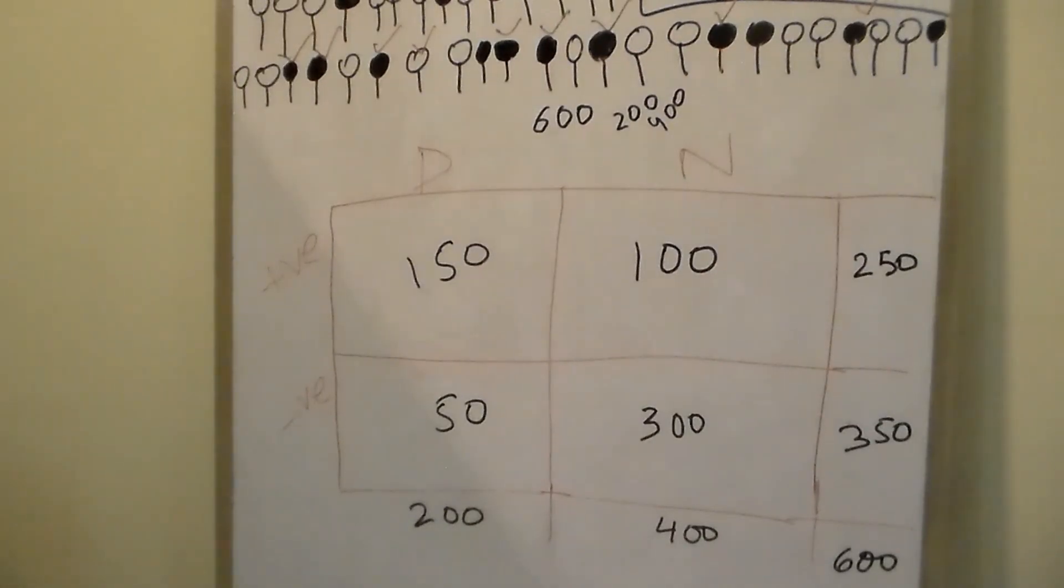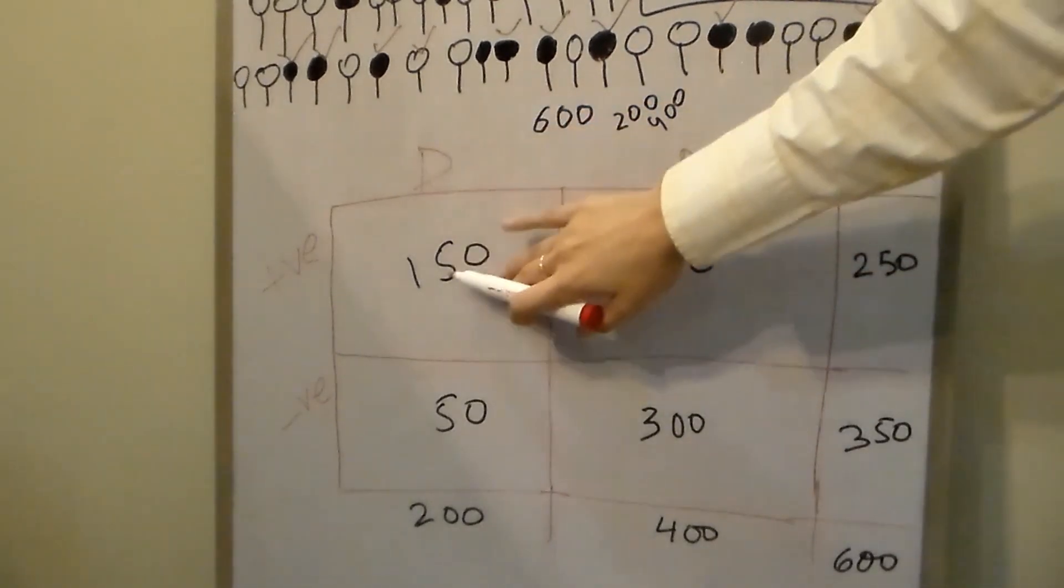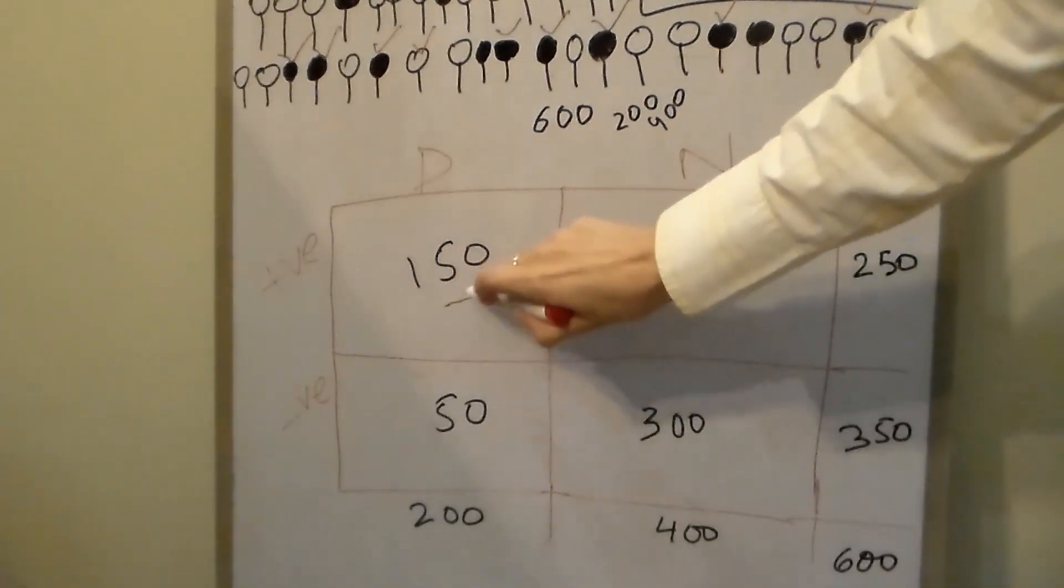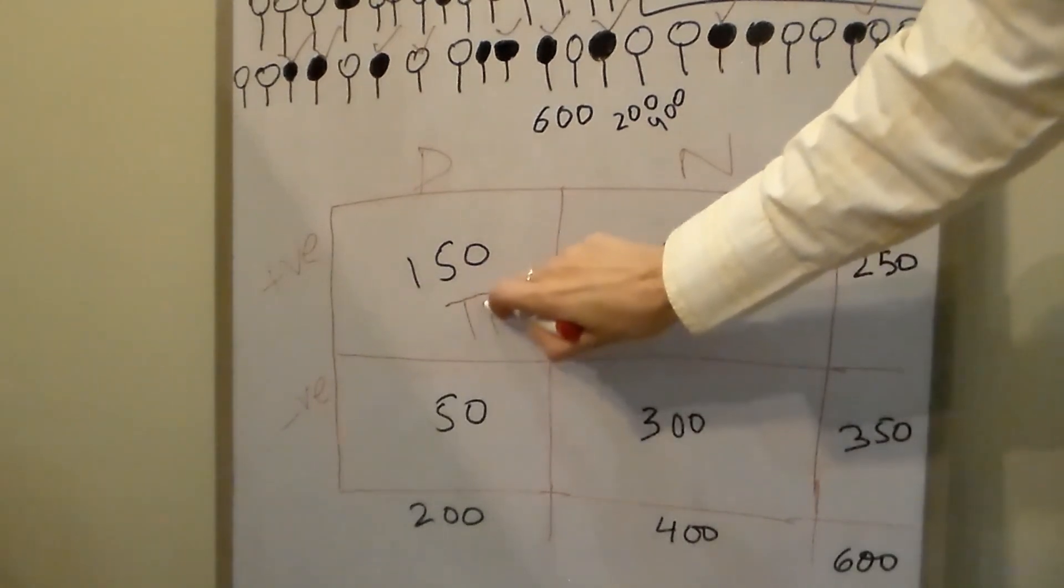Let's give each of these boxes a name. The people with the disease who tested positive are the true positives.